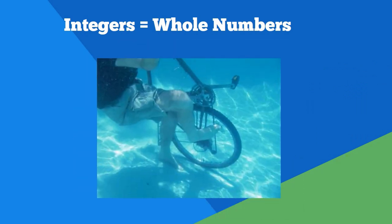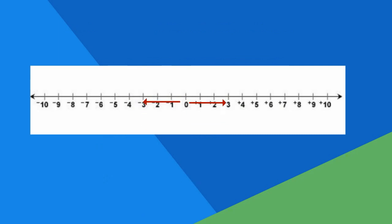A number and its opposite are always the same distance from zero.